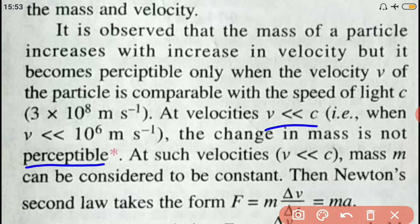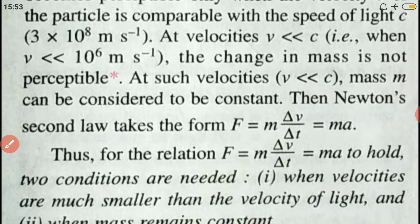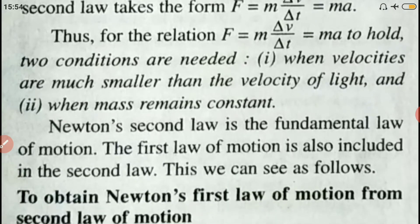F equals ma is only true if the velocity of the object is very much less than the speed of light. Thus, for the relation F equals m·dV/dt equals ma to hold, two conditions are needed: number one, when the velocities are much smaller than the velocity of light, and number two, when the mass remains constant. These two are very important conditions for F equals ma.